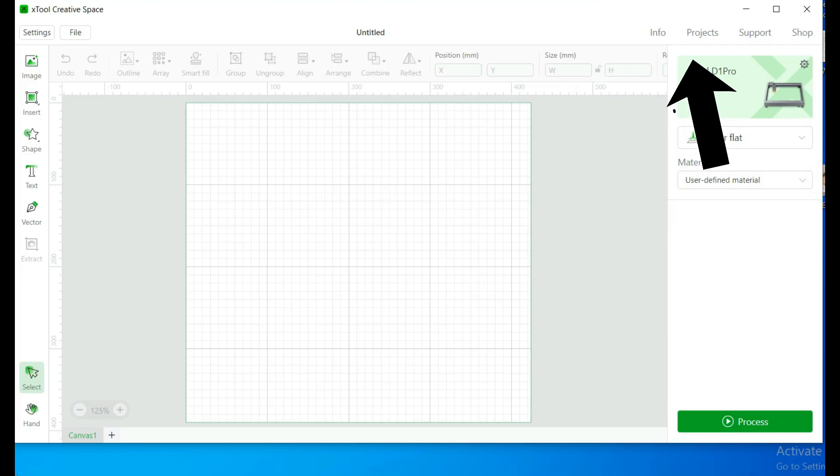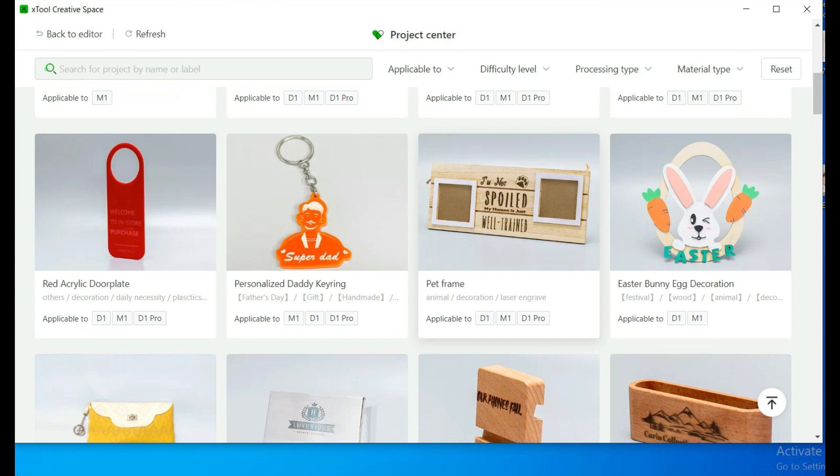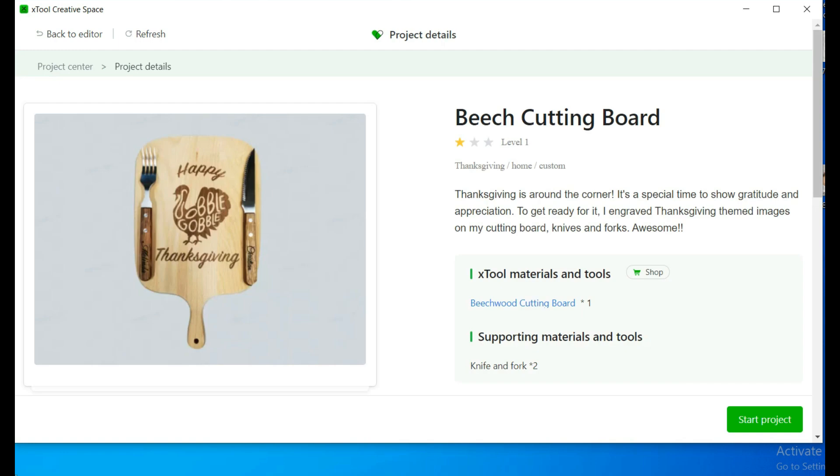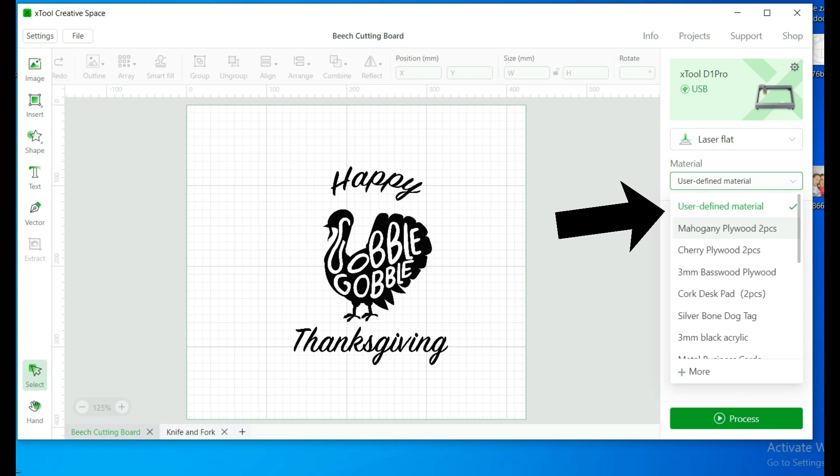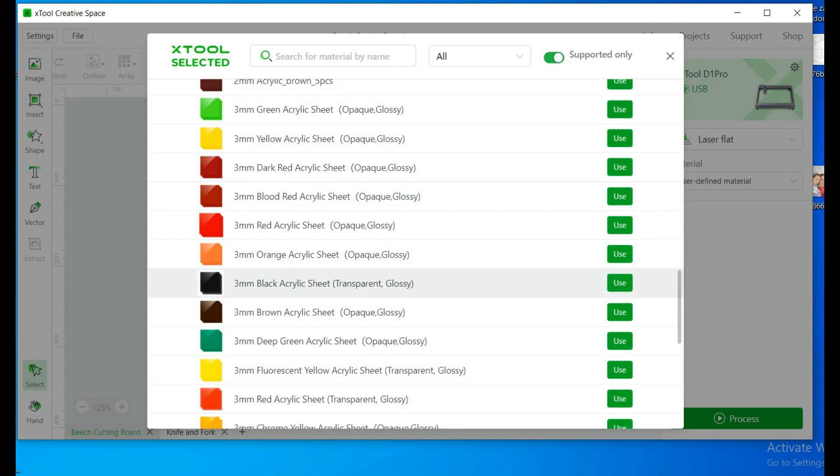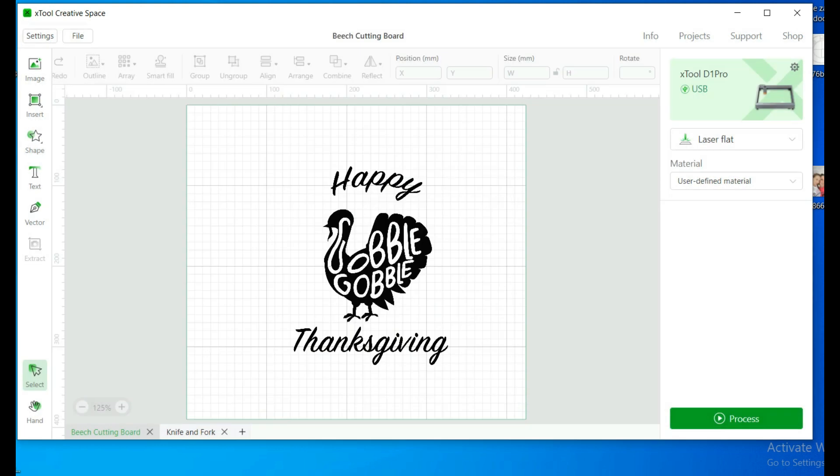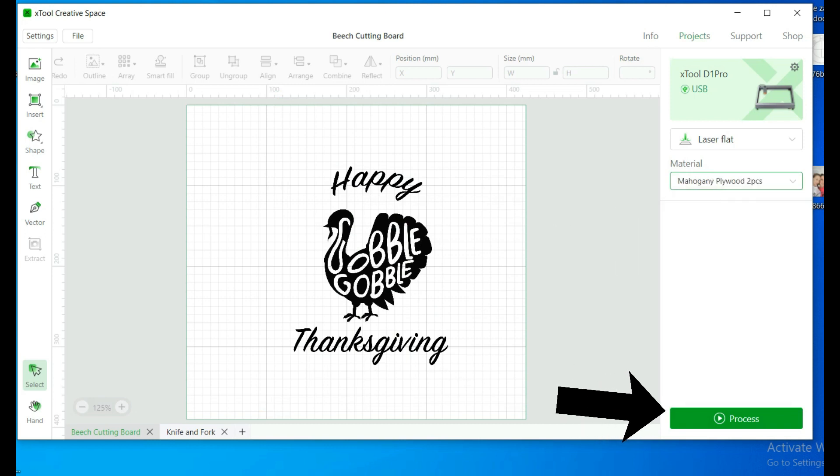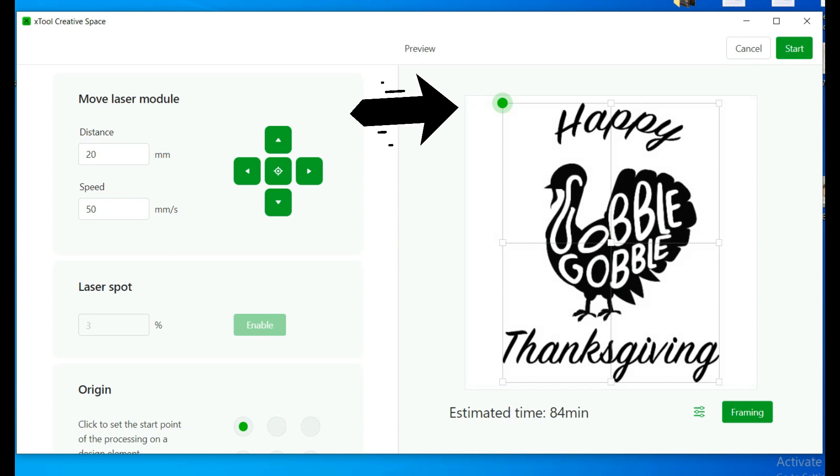By clicking on the project you can download free templates. After you have added the template, you need to choose the material you will use for engraving. I will use plywood this time. The green dots indicate the position of the laser. Click on framing completed to see the exact position where the laser will move.